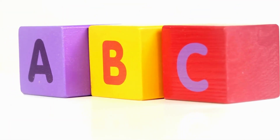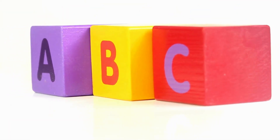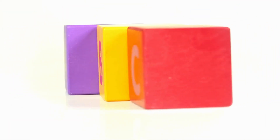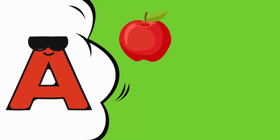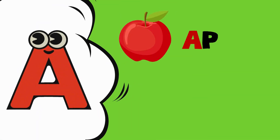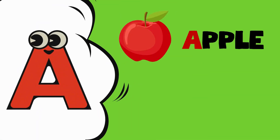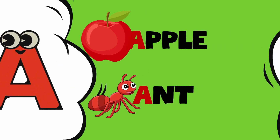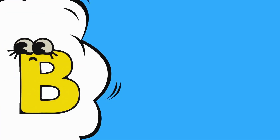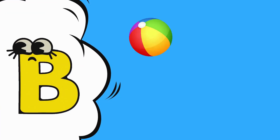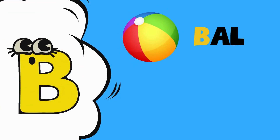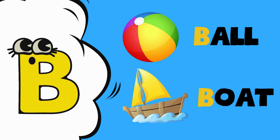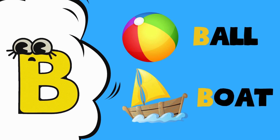Let's look at each letter in the ABC. First is letter A. A is for Apple. A is for Aunt. Letter B. B is for Ball. B is for Boat.